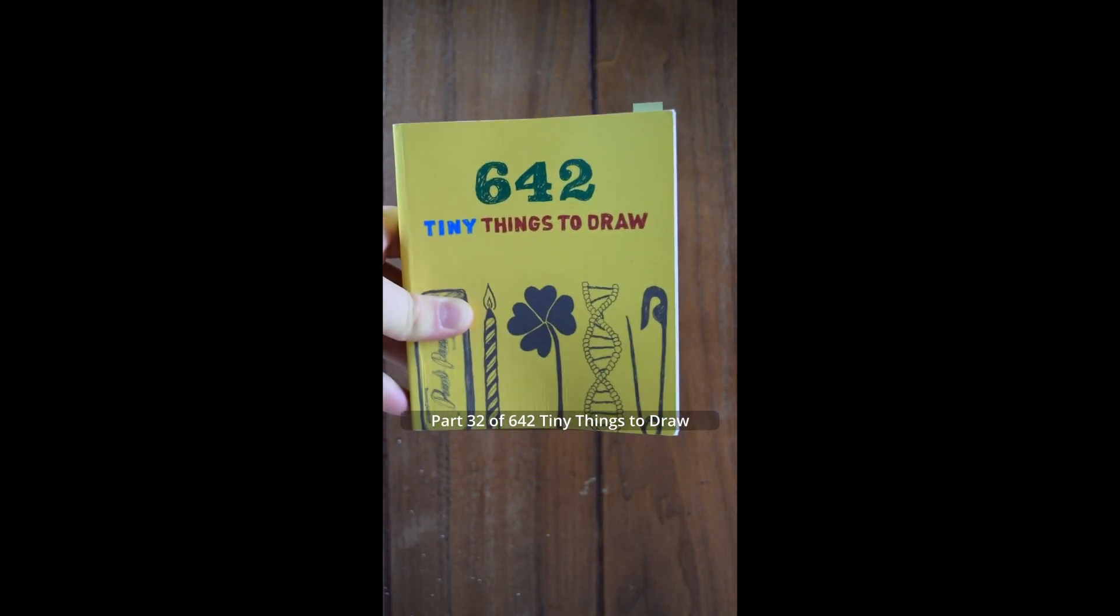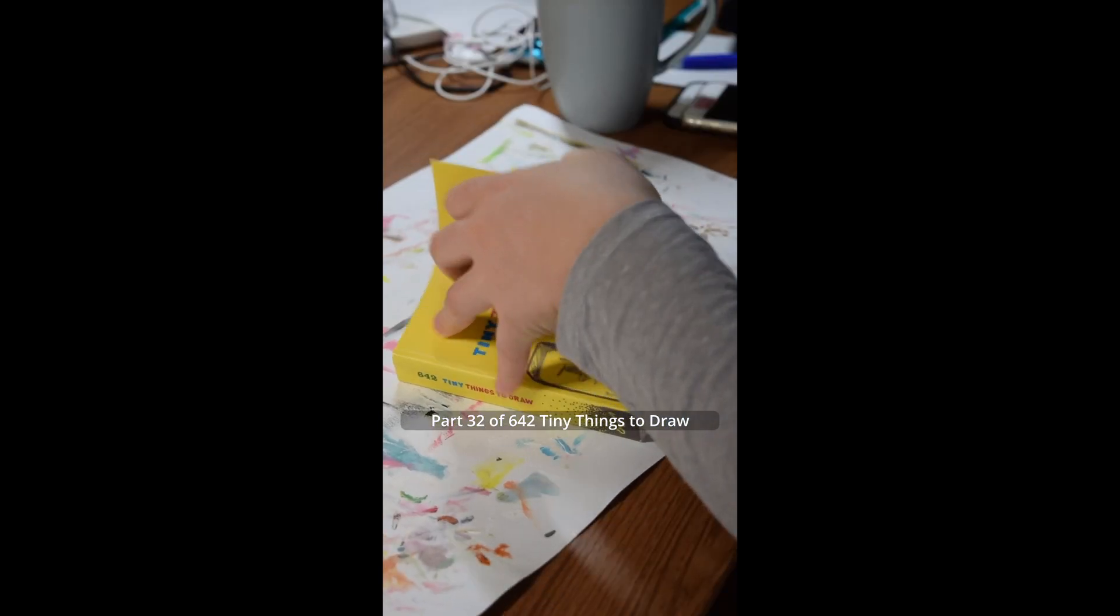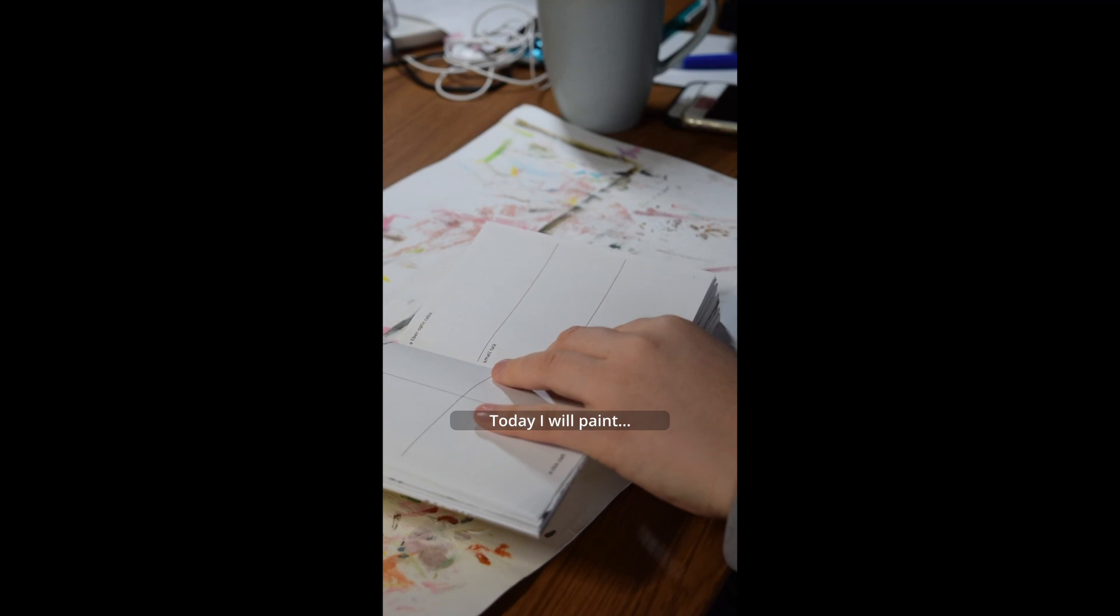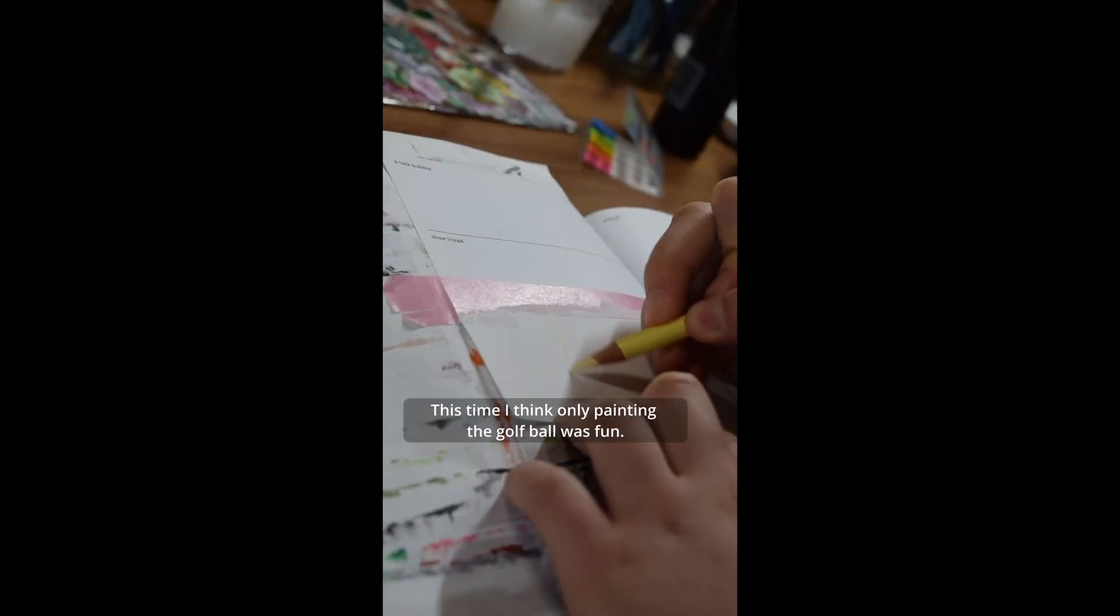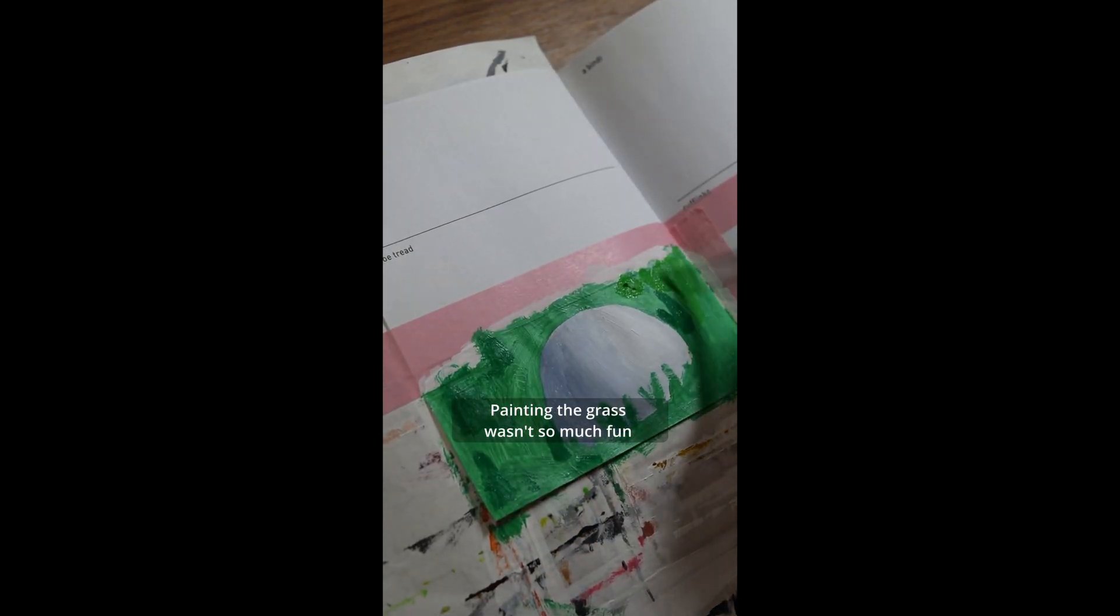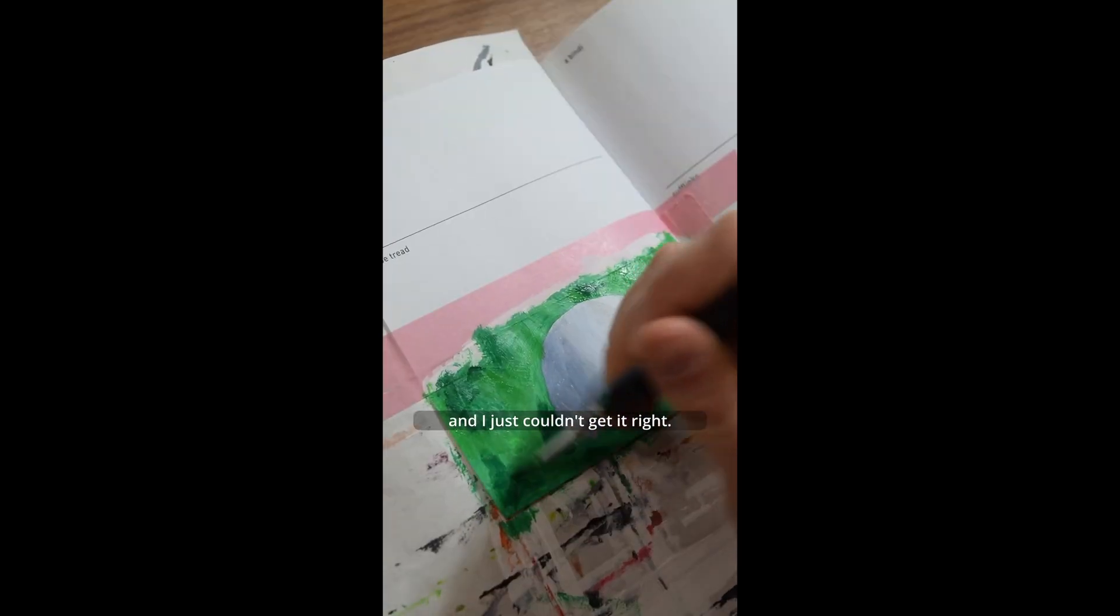Part 32 of 642 tiny things to draw. Today I will paint a golf ball. This time I think only painting the golf ball was fun. Painting the grass wasn't so much fun and I just couldn't get it right.